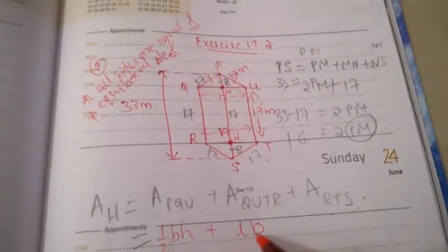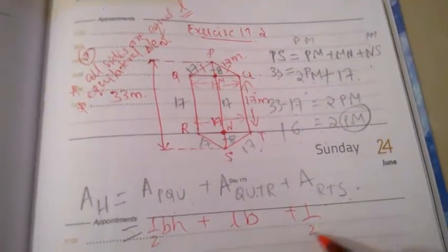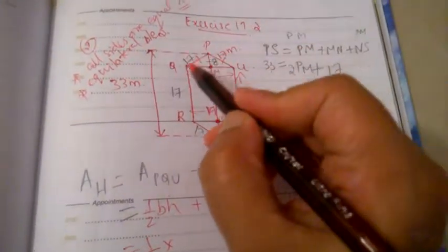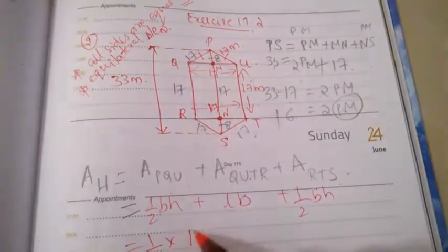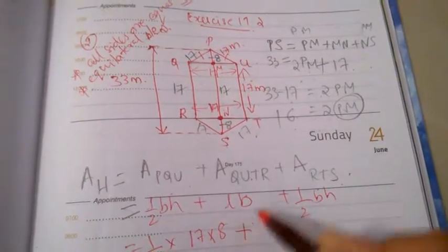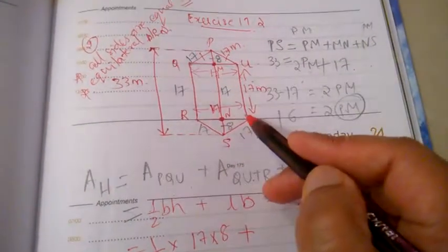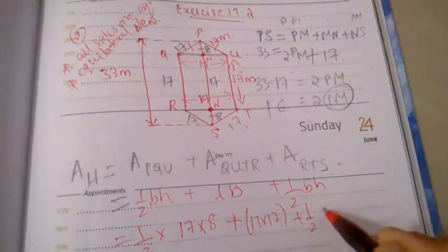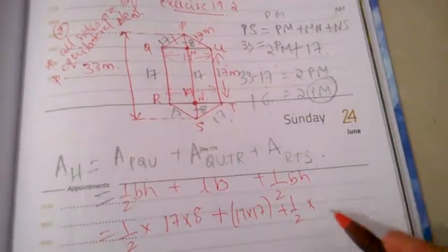Again here half BH. So now substituting half into what is the base of triangle PQU, 17, height is 8. Length of the rectangle is 17, breadth is also 17, so 17 into 17. Plus half into base of 17 into height 8 for the last triangle.